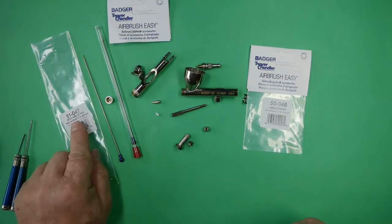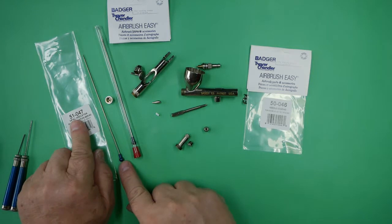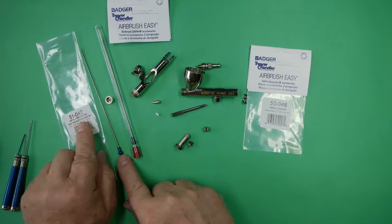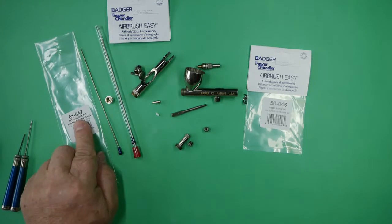And the part number for the new needle, which is the 0.5 as is designated by the blue needle end, the part number is 51-047.